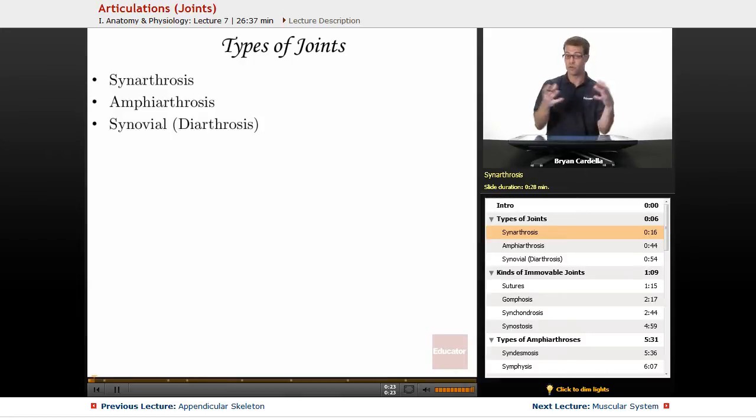Sometimes when you're in utero as a developing baby, you might have slight movement because they're still forming and there's still a little bit of flexibility, but by the time you're born they're fused. Sometimes it takes you getting to early adulthood by the time they're completely fused. So synarthrosis, completely immovable joint.